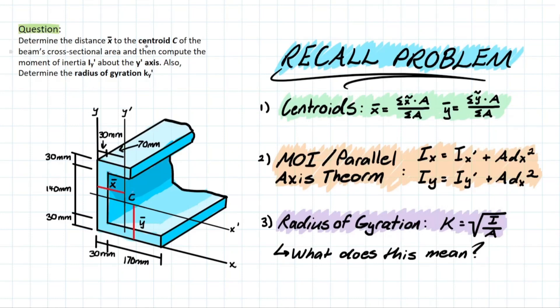Determine the distance x bar to the centroid C of the beam's cross-sectional area, which is the distance from the y-axis to centroid C, which is at the intersection between x prime and y prime. Remember these axes represent where that centroid is lying for the entire composite.